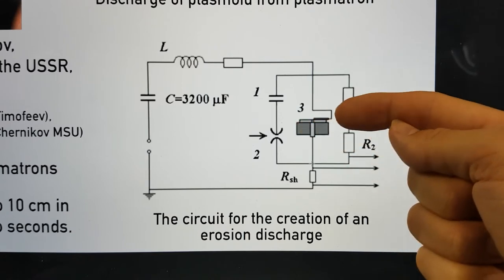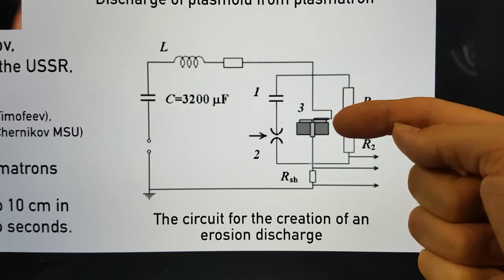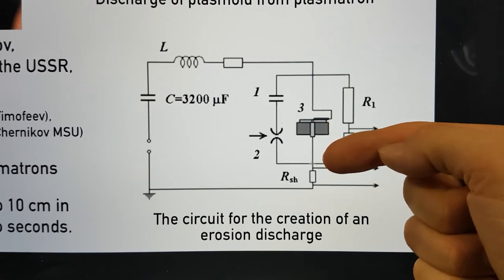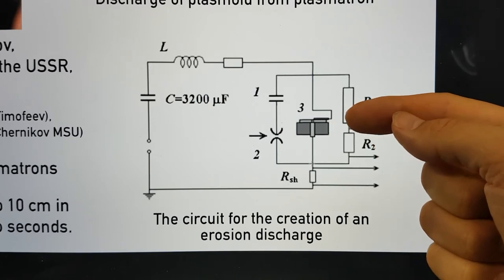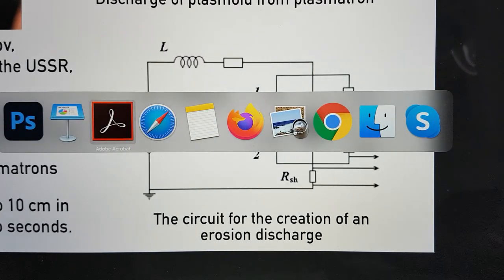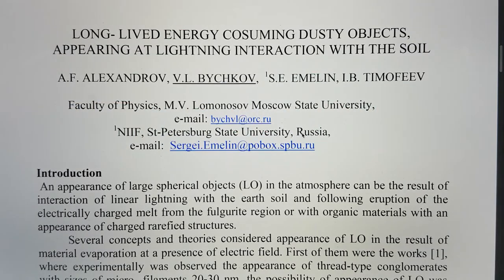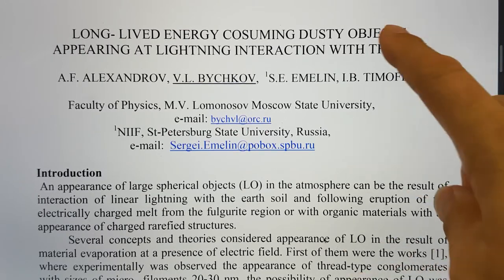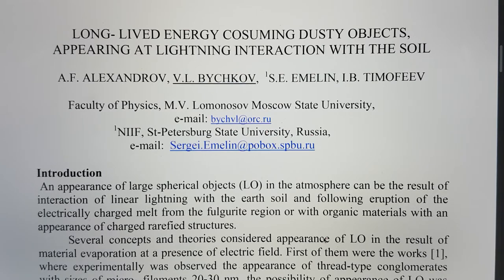Here you have a rough look at what the erosion plasmatron is as a rough schematic. I've got another example here — a paper by Timofiev and A.F. Alexandrov called 'Long-lived energy consuming dusty objects appearing at lightning interaction with the soil.'